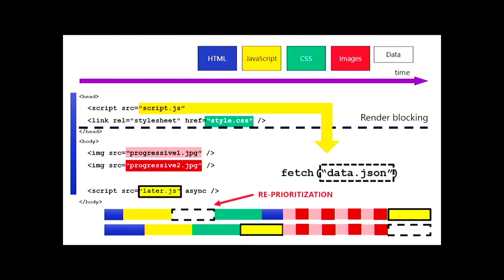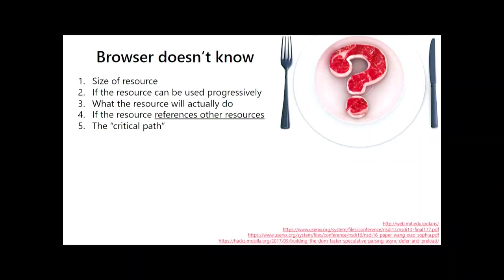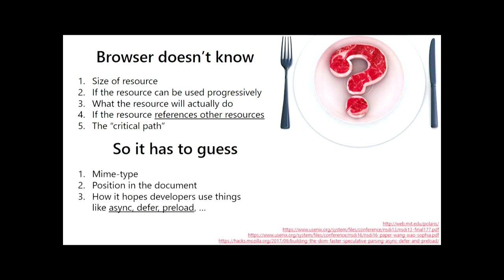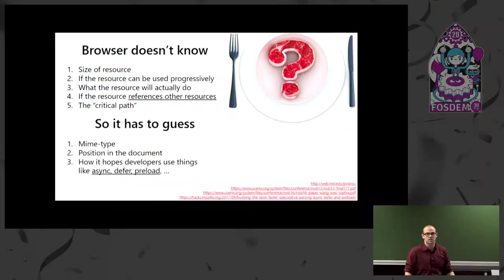I could keep on going, but I think everyone by now understands the gist of this: the browser simply does not know. It doesn't know how large the resource is going to be. It doesn't know what it's going to end up doing. It doesn't know what kind of sub-resources it's going to require. The only thing the browser can do is guess — from coarse signals like the type of file, the position in the document, and things like async, defer, and preload.